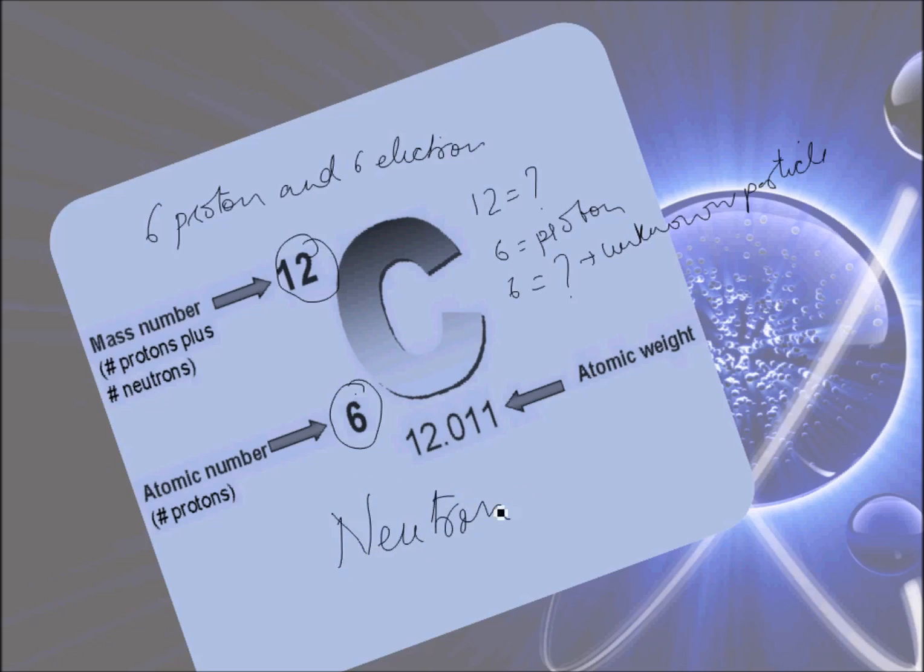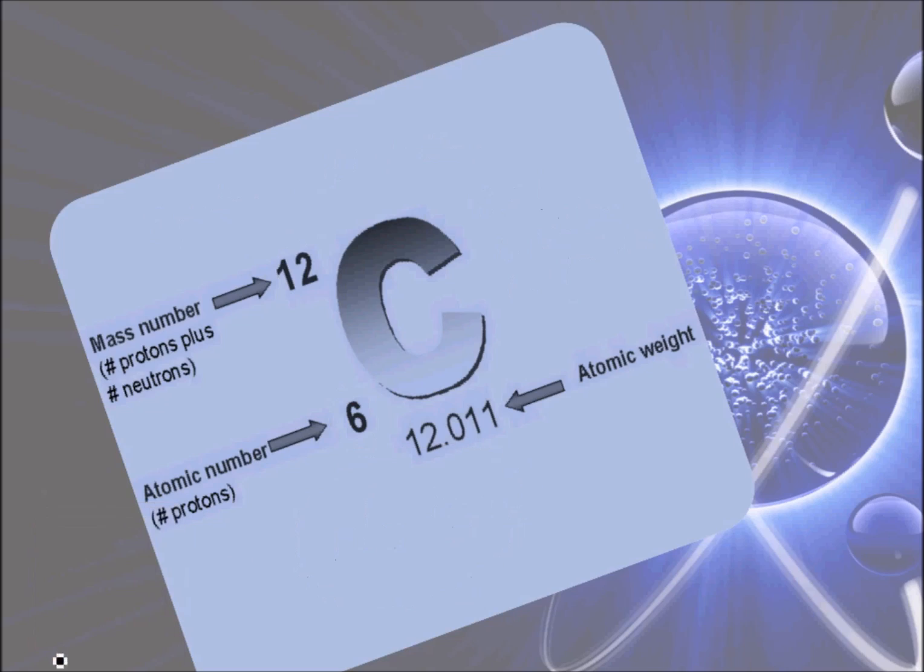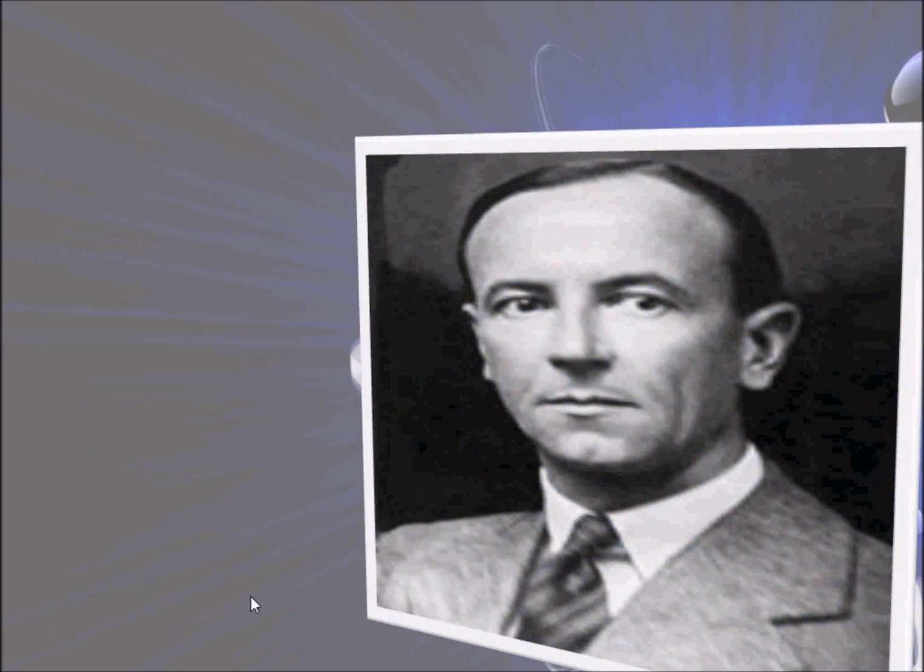So this problem was solved by the discovery of another fundamental particle called neutron. This neutron was basically discovered by Chadwick, we call it James Chadwick, in 1932.